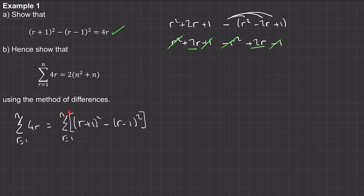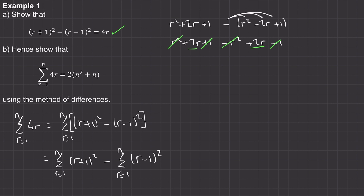The next step is to split out this sum. We can say that this equals the sum between r equals one and n of r plus one squared, minus the sum between one to n of r minus one squared. We'll now substitute in a few values between r equals one to n into each of these sums and see what happens.